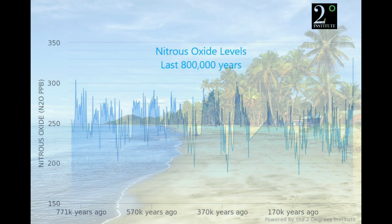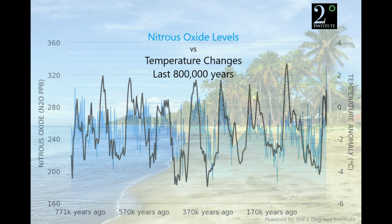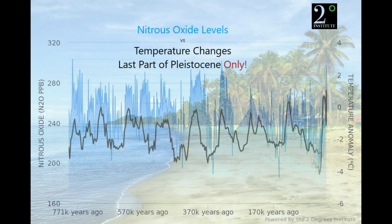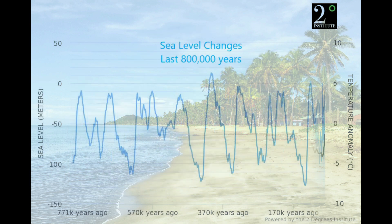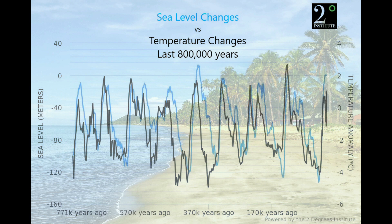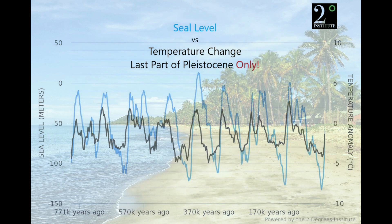Nitrous oxide levels during the last 800,000 years, overlaid with their temperature changes — with the Holocene in, and then with the Holocene out and the Pleistocene only. Again, we're observing general trends. Here are our sea level changes in the last 800,000 years, overlaid with temperature changes — you can see how well they correspond. Notice the delayed effect of temperature changes on sea levels. Taking out the Holocene data and looking at just the Pleistocene data, the graph looks something like this.